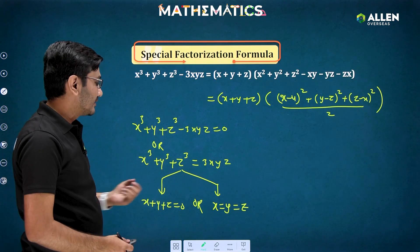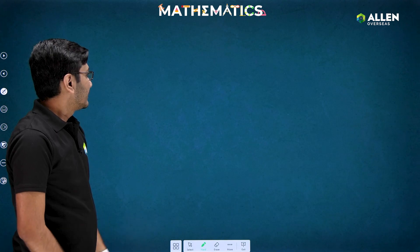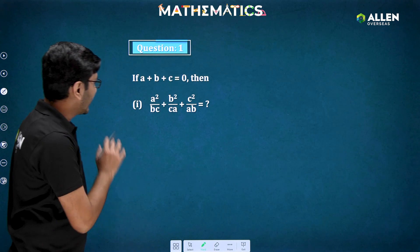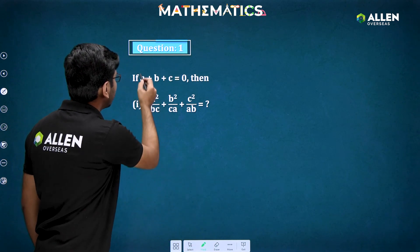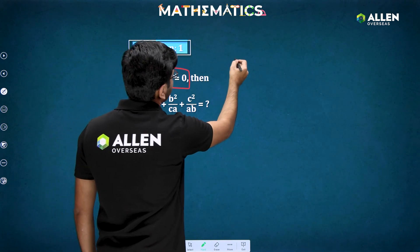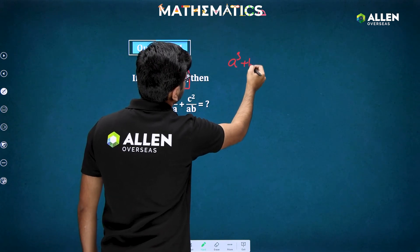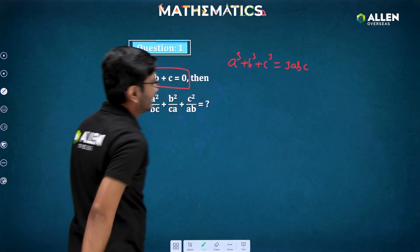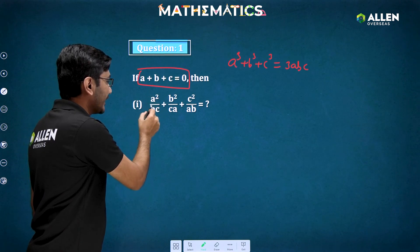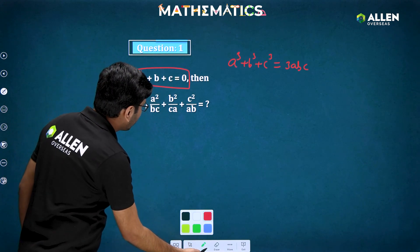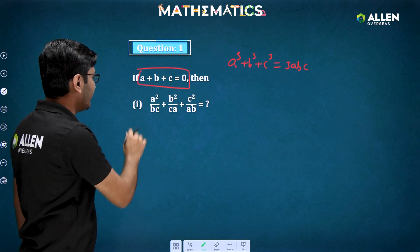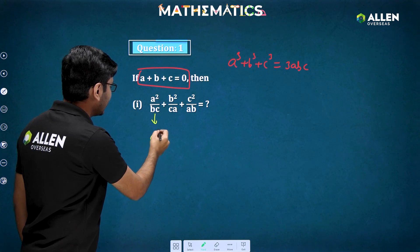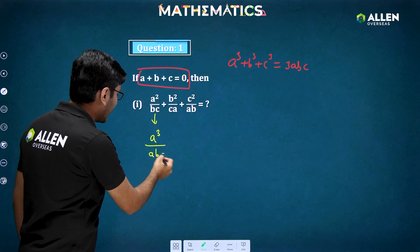Now let's see questions based on these facts. The question is: if a + b + c = 0, find the value of a²/bc + b²/ca + c²/ab. From a + b + c = 0 we can quickly conclude that a³ + b³ + c³ = 3abc. To solve the expression, multiply the first term by a/a to get a³/(abc), multiply the second term by b/b to get b³/(abc).